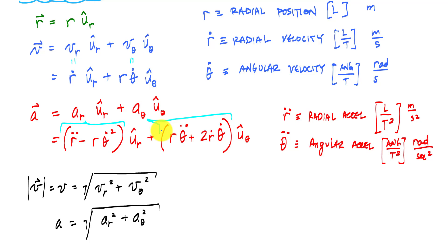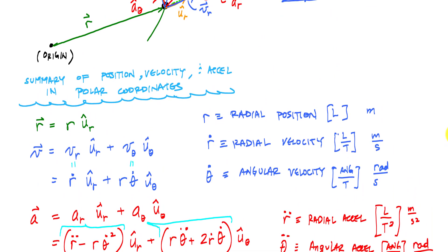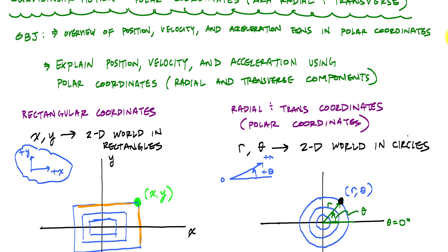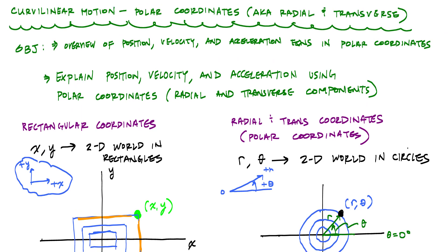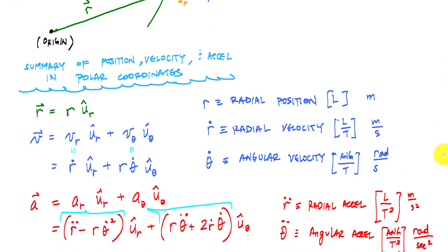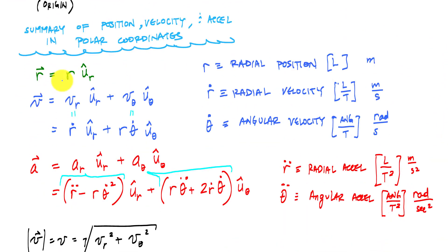That covers the overview of radial and transverse components — all the equations used when dealing with polar coordinates in dynamics. You could stop here if you're not interested in the derivation. But if you want to understand how we go from the position vector to the velocity vector, and then from the velocity vector to the acceleration vector, stick around.